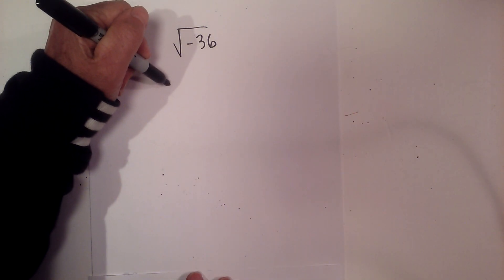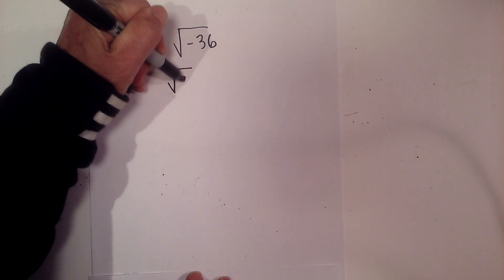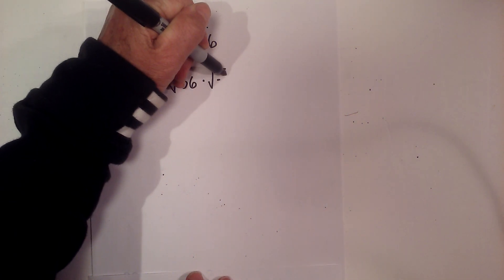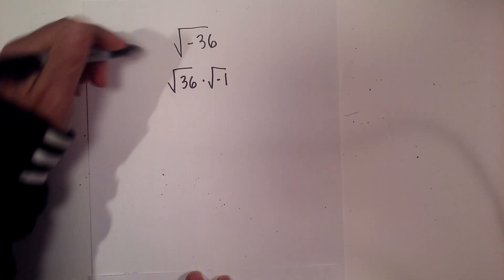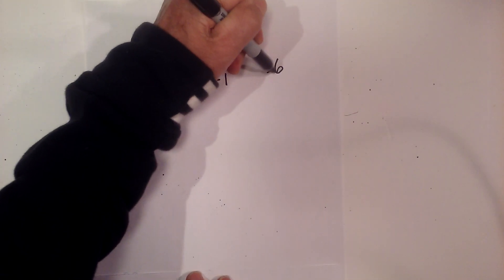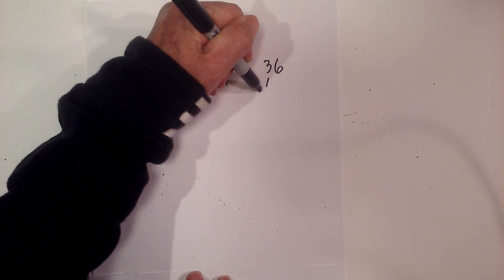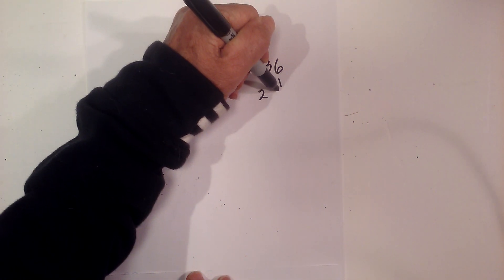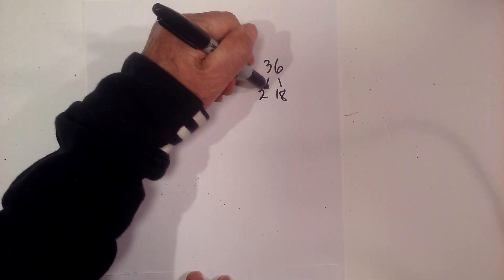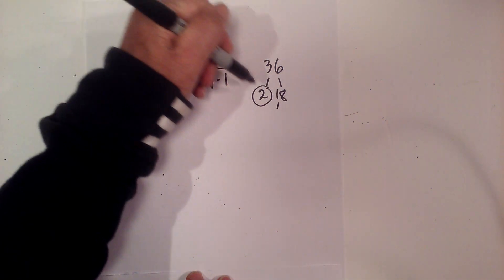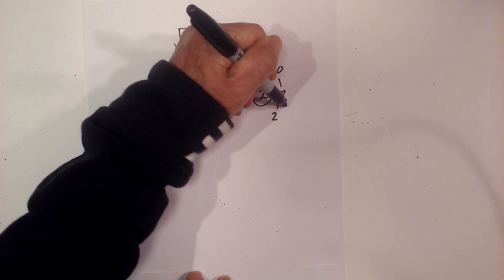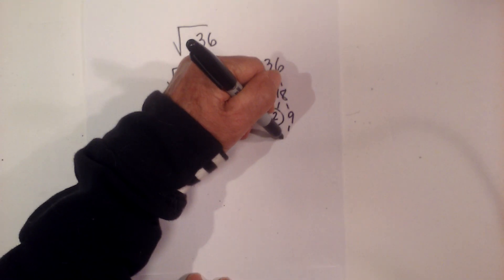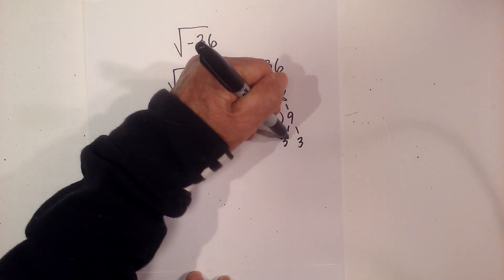First I'm going to rewrite it as the square root of 36 times the square root of negative 1. Now I'll complete a factor tree for 36: 2 times 18 is 36, circle the 2 because it is prime; 2 times 9 is 18, circle the 2 because it is prime.